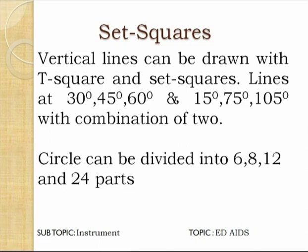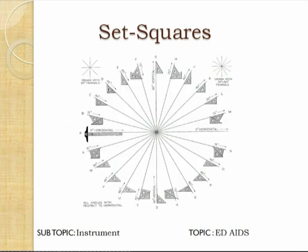A circle can be divided into 6, 8, 12, and 24 equal parts with the help of set squares. Using the 45-degree set square, we can divide into 8 parts; with the 60-degree set square, we can divide into 6 parts; and with the combination of 30-60 degree set squares, we can divide into 12 parts. By different combinations of the two set squares, we can draw all angles in multiples of 15 degrees.